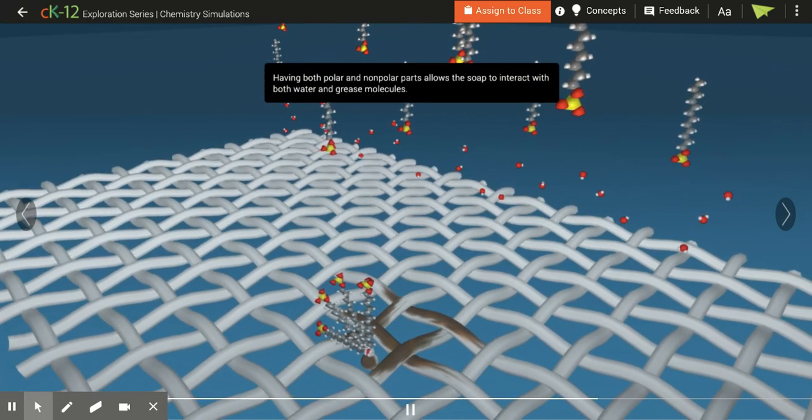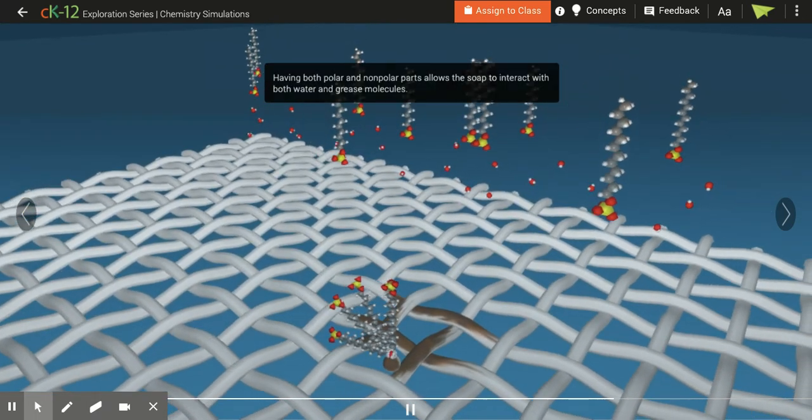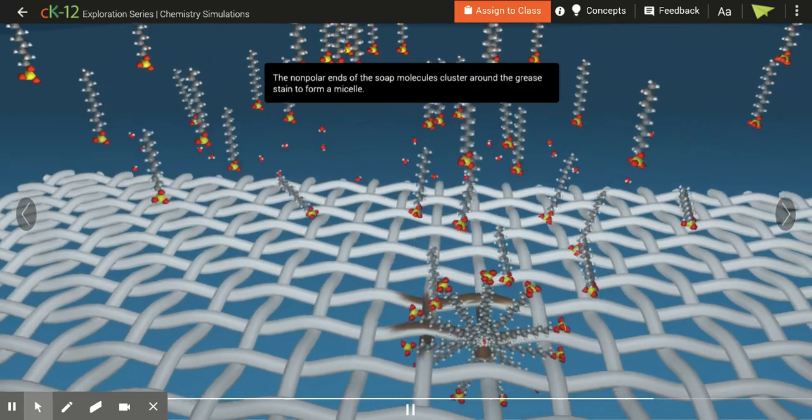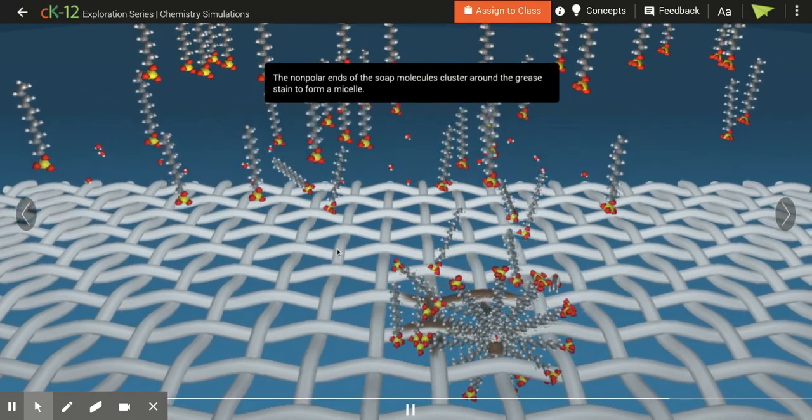Having both polar and non-polar parts allows the soap to interact with both the water and the grease. The non-polar end clusters around the grease to form a micelle.